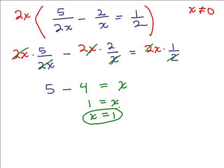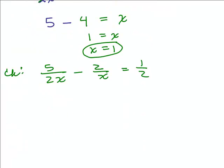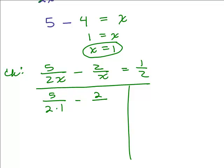All right, now we do need to check it. We have to check that x equals 1 is really a solution. So let's check by plugging in 1 for x into the original equation. You don't want to do it after you've already cleared the denominators. So we're just going to put in 1 for x on both sides.